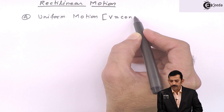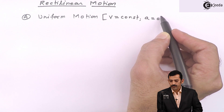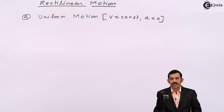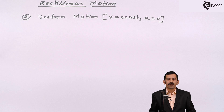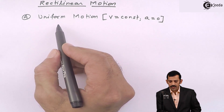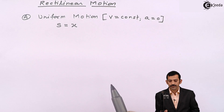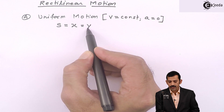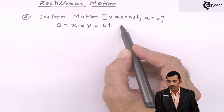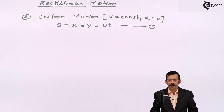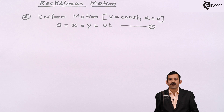In uniform motion, velocity remains constant and acceleration is zero. From equations of motion, we get only one equation: S (or X if horizontal, Y if vertical) equals U times T. This single equation represents displacement as the product of velocity and time.